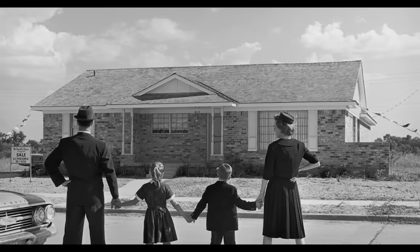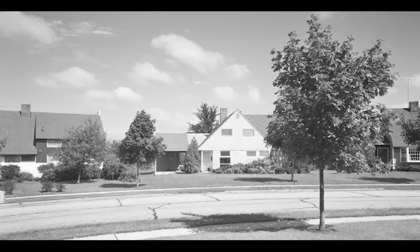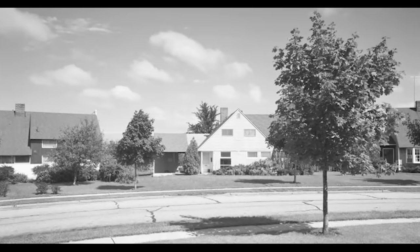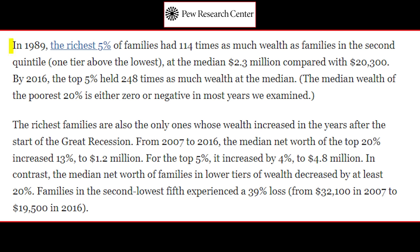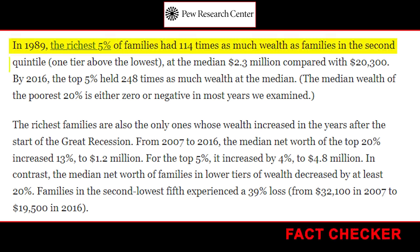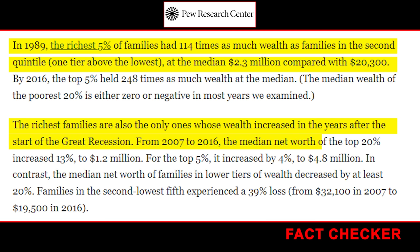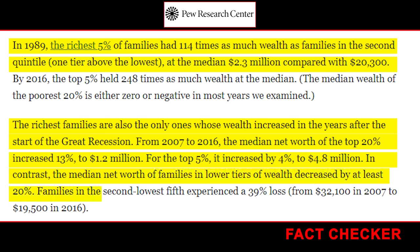When the Fair Housing Act was finally enacted in 1968, allowing African Americans to purchase homes in the suburbs, it had already become financially unattainable for many black families. Meanwhile, white families continued to acquire these homes, reaping the benefits of equity and the subsequent accumulation of wealth. White families used their home equity to finance their children's college education and support their elderly parents, achieving financial independence without depending on their descendants.